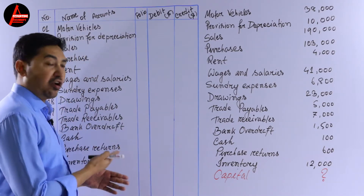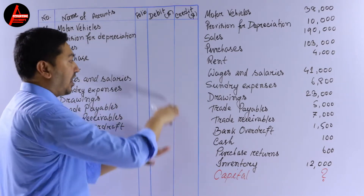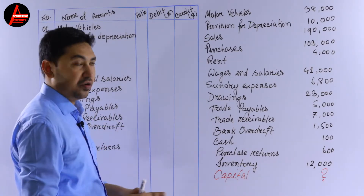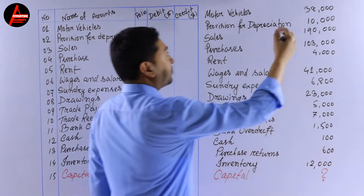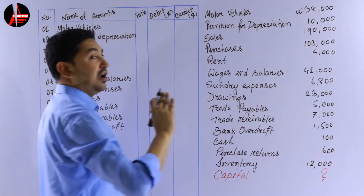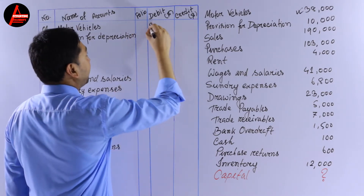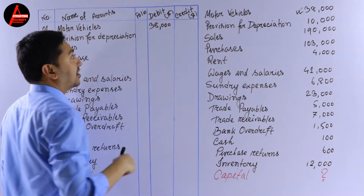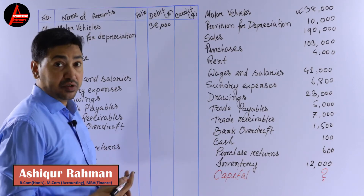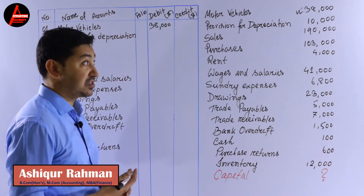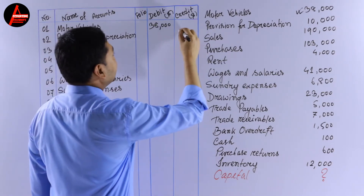I have already drawn the format of the trial balance and I'll enter these items now. First, motor vehicles: 38,000 dollars. Motor vehicles is an asset, so it comes on the debit side. Next, provision for depreciation for motor vehicles — it's a liability for the business, and all liabilities come on the credit side, so write 10,000 dollars on the credit side.